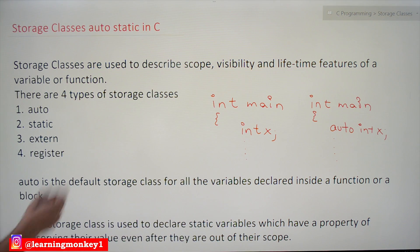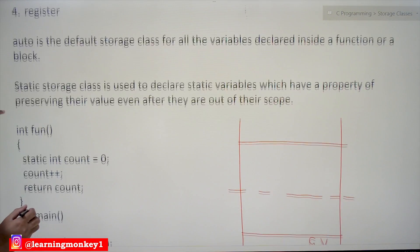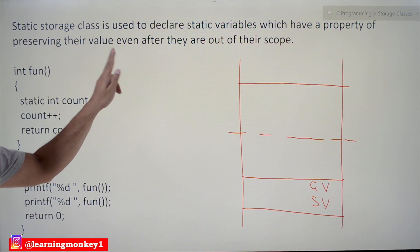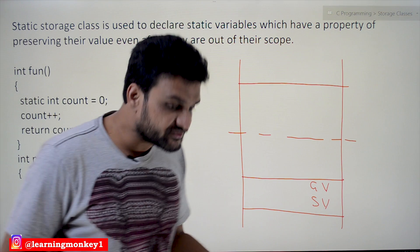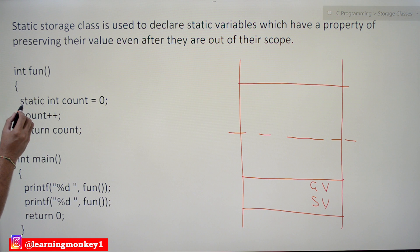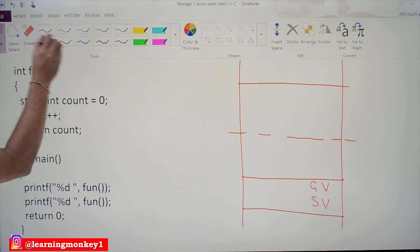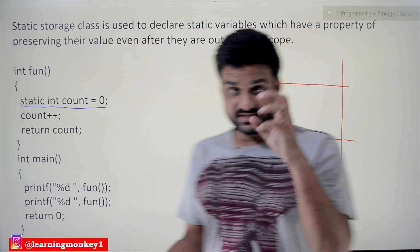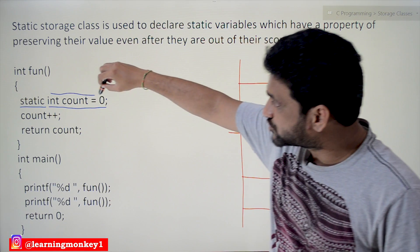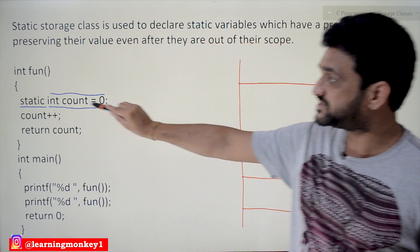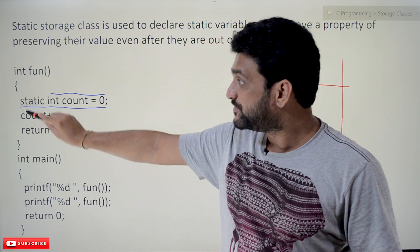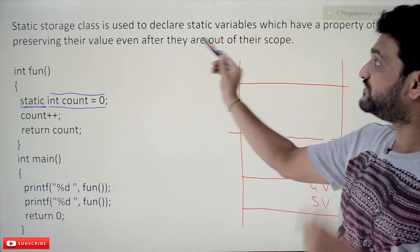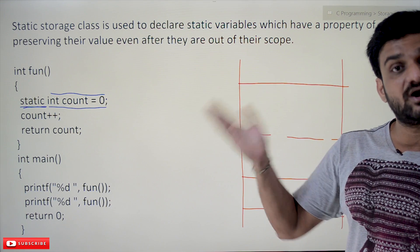The next one is static. The static storage class is used to declare static variables, which have the property of preserving their values even after they are out of their scope. Whenever a variable is declared with static, instead of completing its scope within the function, the life of that variable will change. Preserving their value even after they are out of their scope — these values can still be used.